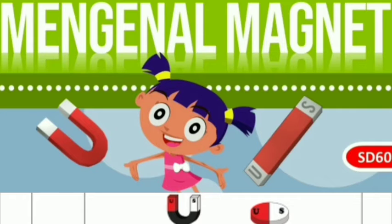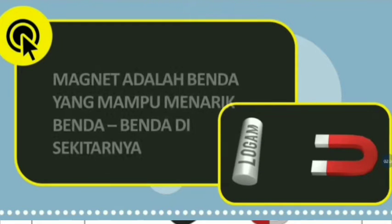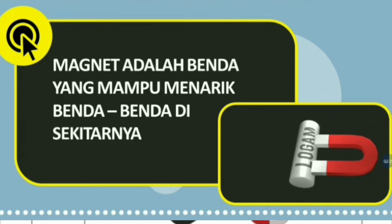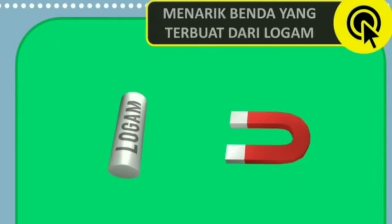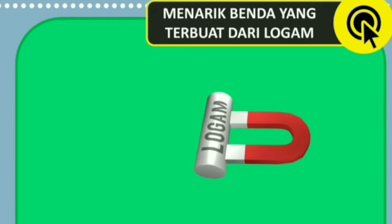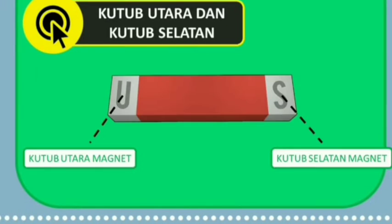Mengenal magnet. Magnet adalah benda yang mampu menarik benda-benda di sekitarnya, khususnya menarik benda yang terbuat dari logam. Kemudian magnet memiliki kutub utara dan kutub selatan.